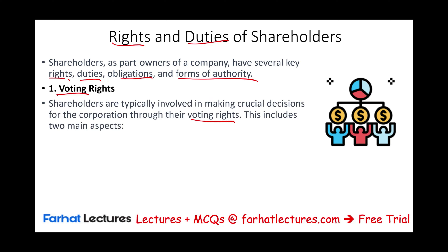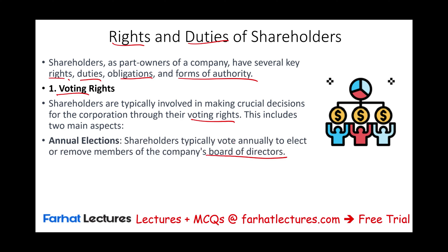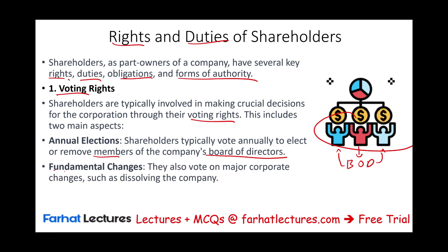Voting rights usually include two aspects. The first is when you select the board of directors — shareholders typically vote annually to elect or remove members. Since you're at the top, the board of directors is right below you, and you select them. In turn, the board selects the committee to run the company, appointing the CEO who hires VPs, top-level managers, and employees to run the company on your behalf. The second voting aspect is you can vote on fundamental changes, such as dissolving the company.